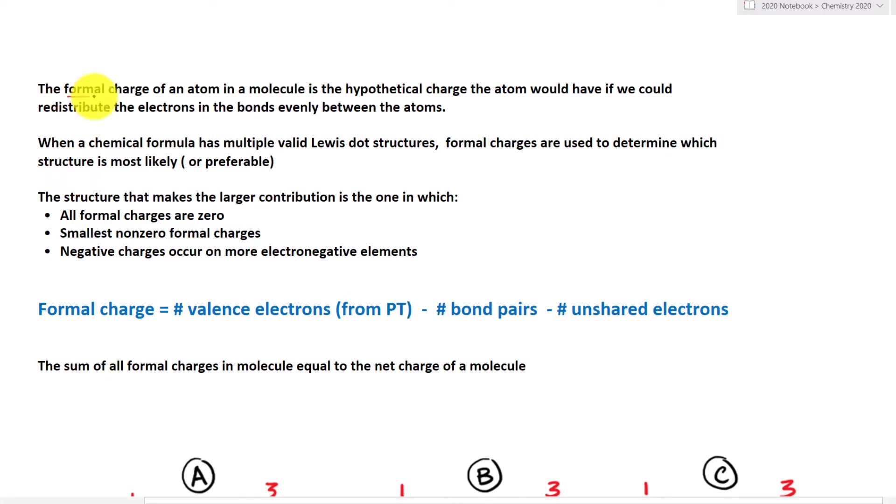Well, formal charges of an atom is basically a hypothetical charge of an atom. First, we have our given chemical formula. From there, we determine the Lewis dot structure. What happens when we have multiple valid Lewis dot structures? And that is where formal charges are going to tell us which structure is more likely to occur in nature. Well, let's look at this. There are three specific factors.